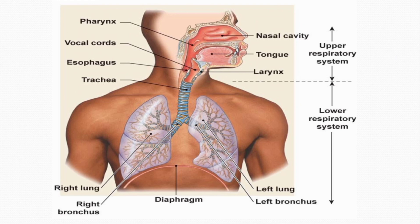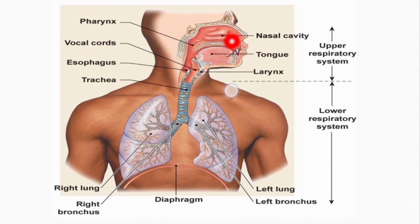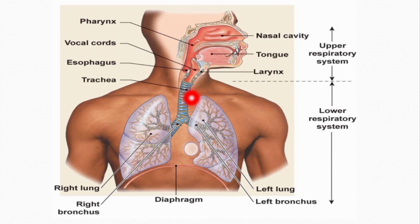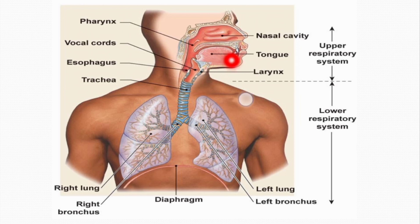Now we come to the respiratory tract. Anatomically, we can divide the respiratory tract into two major portions: the upper respiratory tract and the lower respiratory tract. The upper respiratory tract ranges from the nose, nasal cavity, pharynx, and finally larynx — so from entrance up to the level of larynx. From the trachea downward through the bronchi and bronchioles up to the level of terminal bronchioles, this is the lower respiratory tract.